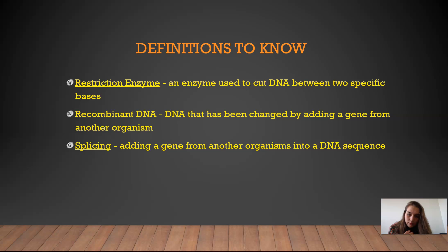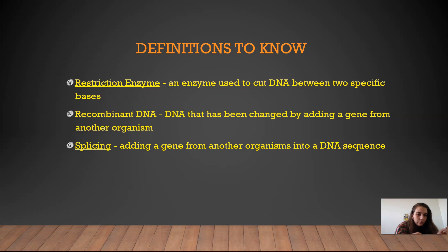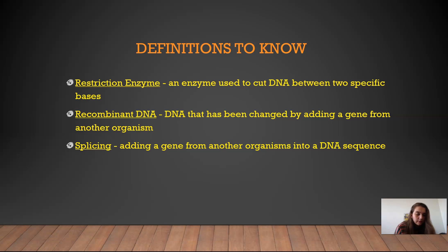So I want to go over some things you should definitely know, some things to add to your notes. A restriction enzyme is an enzyme that's used to cut DNA at a specific part. Enzymes do a lot of things in our bodies, but in terms of DNA, they act to cut open DNA — they're literally like scissors. Recombinant DNA is DNA that's been changed by adding a gene from another organism. And splicing is the process of adding that gene from one organism's DNA to somebody else's, so they get that gene. Those are three definitions to keep in your notes.